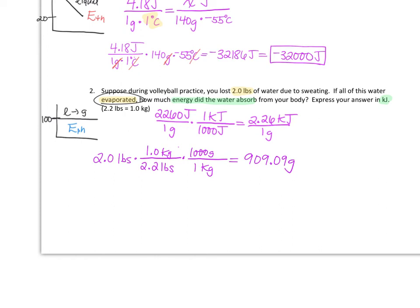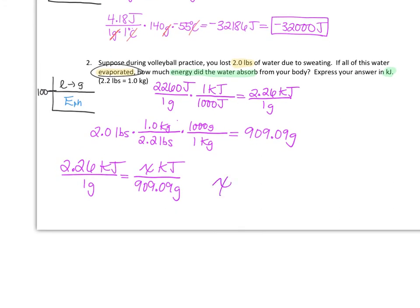So now that I've got that, and I've got my heat of vaporization in kilojoules per gram, now all I need to do is solve. So x kilojoules for 909.09 grams. Okay, cross multiply and solve for x. We're going to get 2.26 kilojoules over 1 gram times 909.09 grams. Grams will cancel, and we'll be left with just kilojoules, which is going to be 2,055 kilojoules. And if we want to round that to 2 sig figs, 2,100 kilojoules.